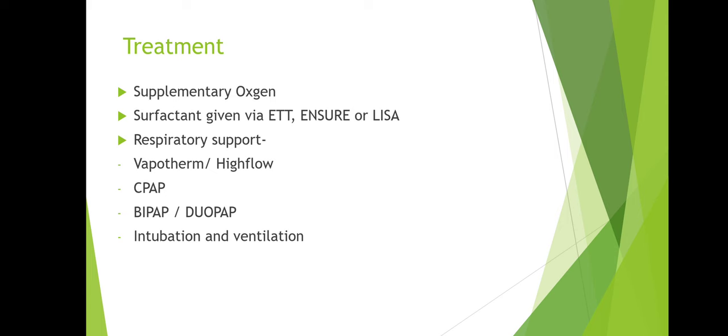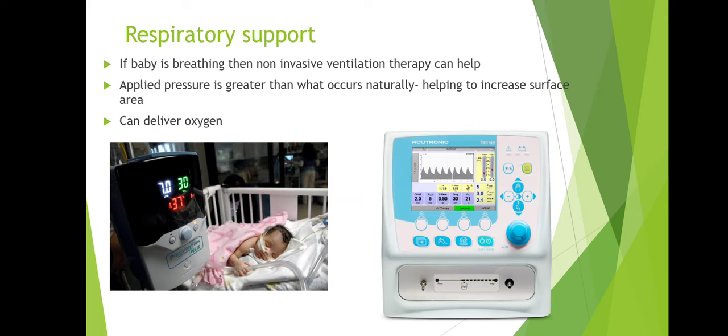What respiratory support is available? We can give oxygen if needed. There's vapour-FIRM or high flow devices, CPAP — continuous positive airway pressure — then BiPAP, DuoPAP, and then intubation and ventilation. If a baby is breathing, non-invasive respiratory support strategies can help by applying pressure greater than what occurs naturally, increasing the surface area within the lungs. For babies with RDS where some alveoli have collapsed, going onto vapour-FIRM or high flow can help increase that surface area again and deliver oxygen.